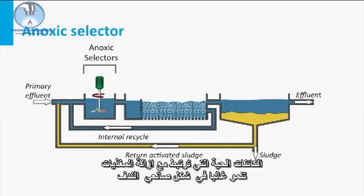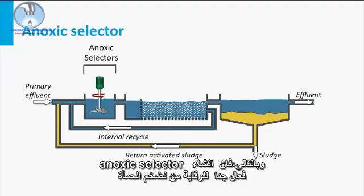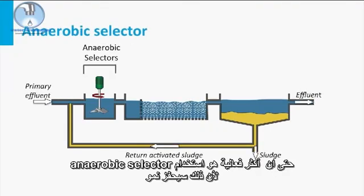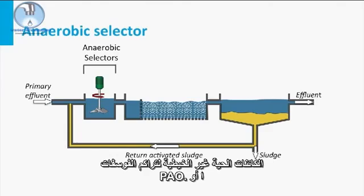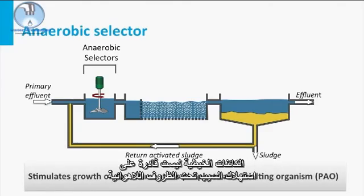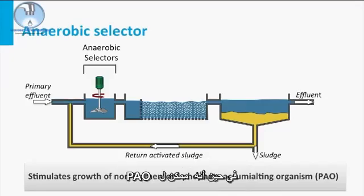Organisms that are associated with nutrient removal will often grow as flock formers. Therefore, introducing anoxic selectors is also very effective as a prevention of bulking sludge. Even more effective is the use of an anaerobic selector, since that will stimulate the growth of non-filamentous phosphate-accumulating organisms, or PAO. The filamentous organisms are not able to consume substrate under anaerobic circumstances, while the PAO can.